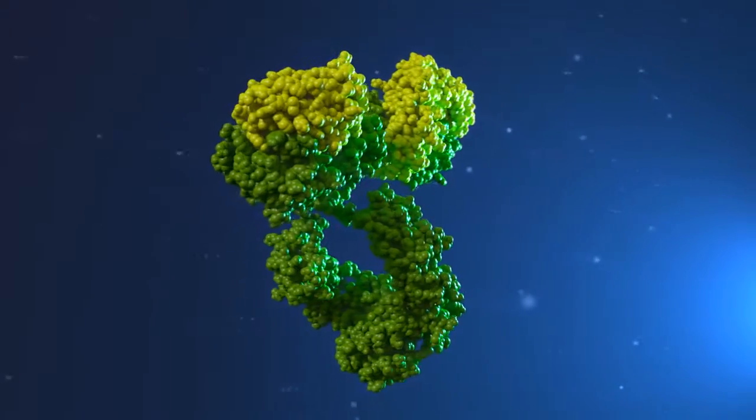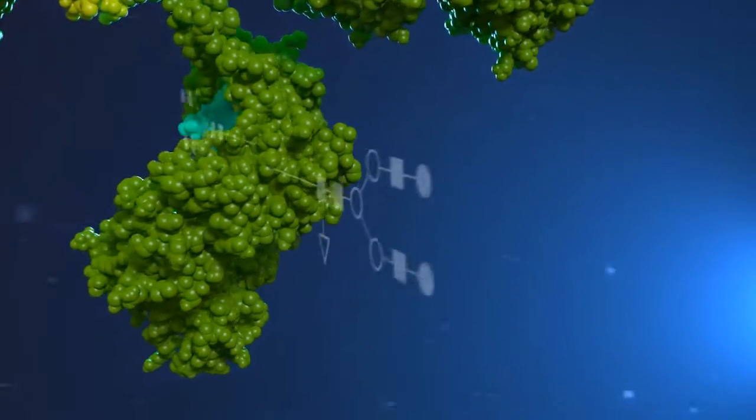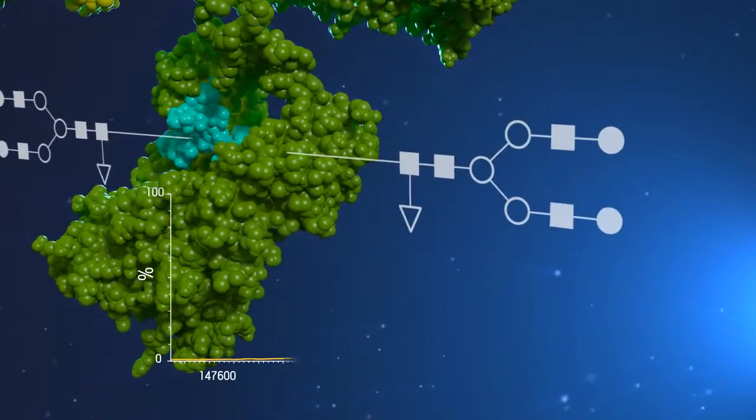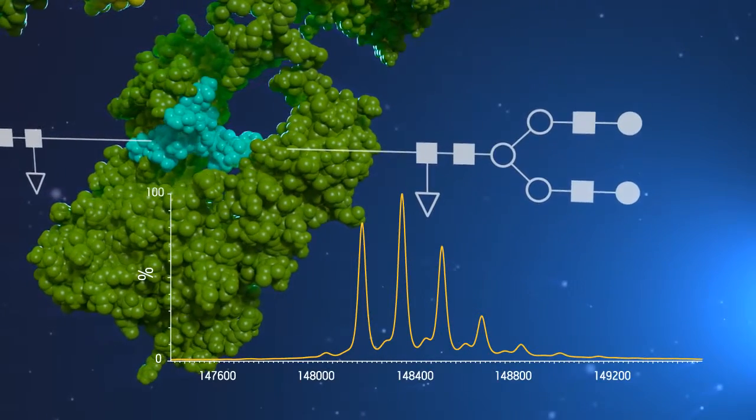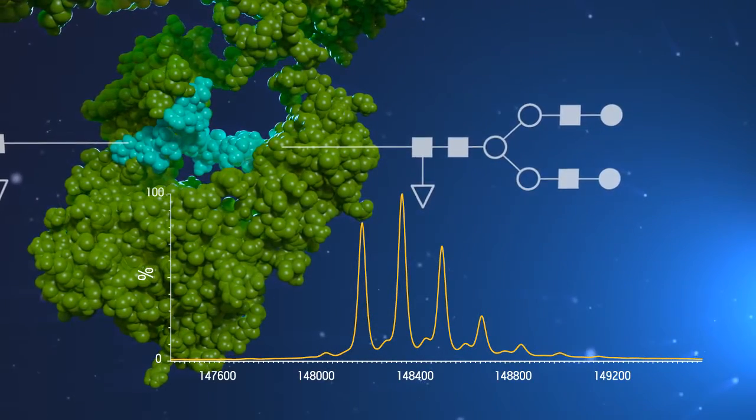The heavy chains are post-translationally modified by glycosylation. Natural variation of the glycan structures means that even a pure sample will have a complex mass spectrum.